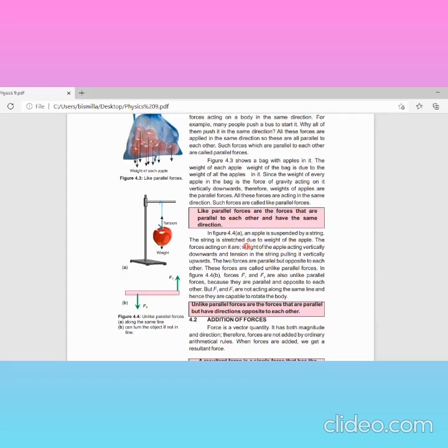An apple is suspended by a string. The string is stretched due to weight of the apple. The forces acting on it are weight of the apple acting vertically downwards and tension pulling upwards. These two forces are parallel but opposite. They are unlike parallel forces. We have taken F1 and F2. They will be opposite but on the same line. One force is F1 in upward direction and F2 is in downward direction. They are opposite but parallel.